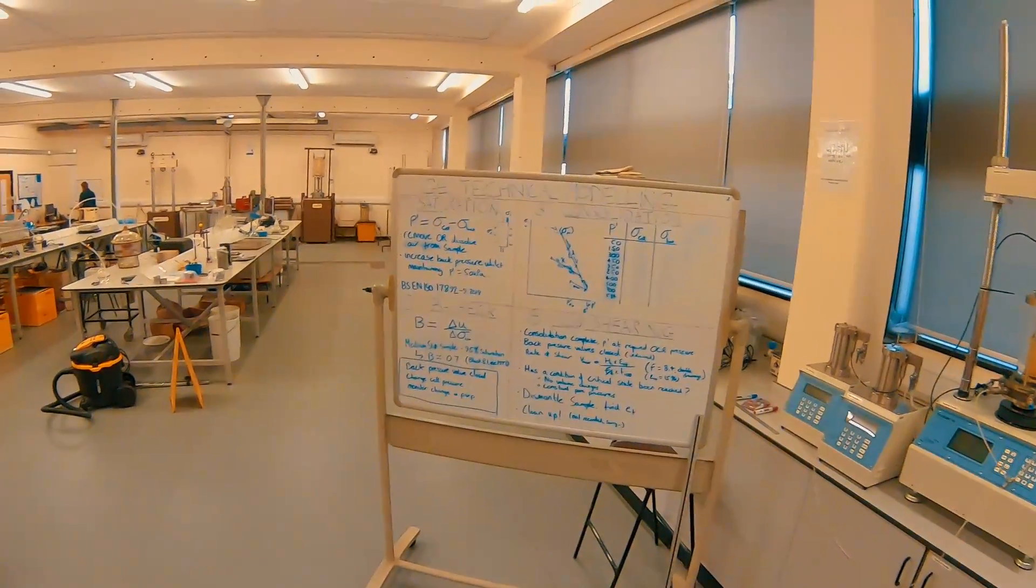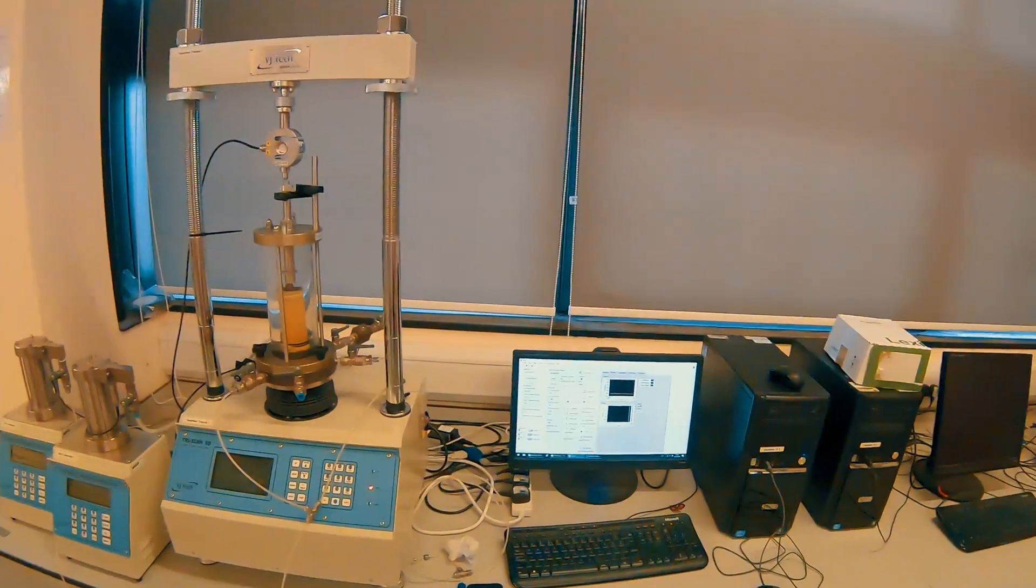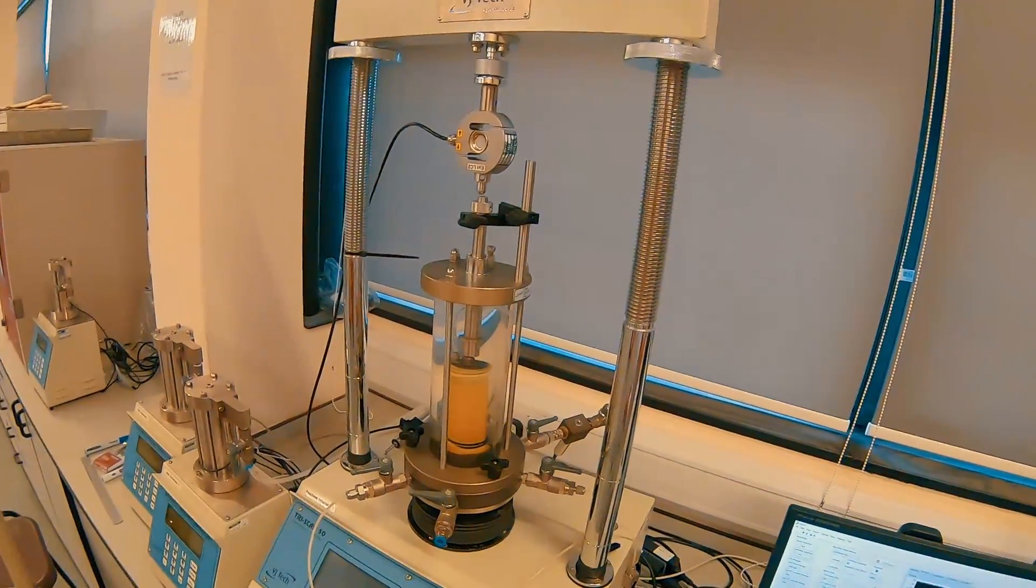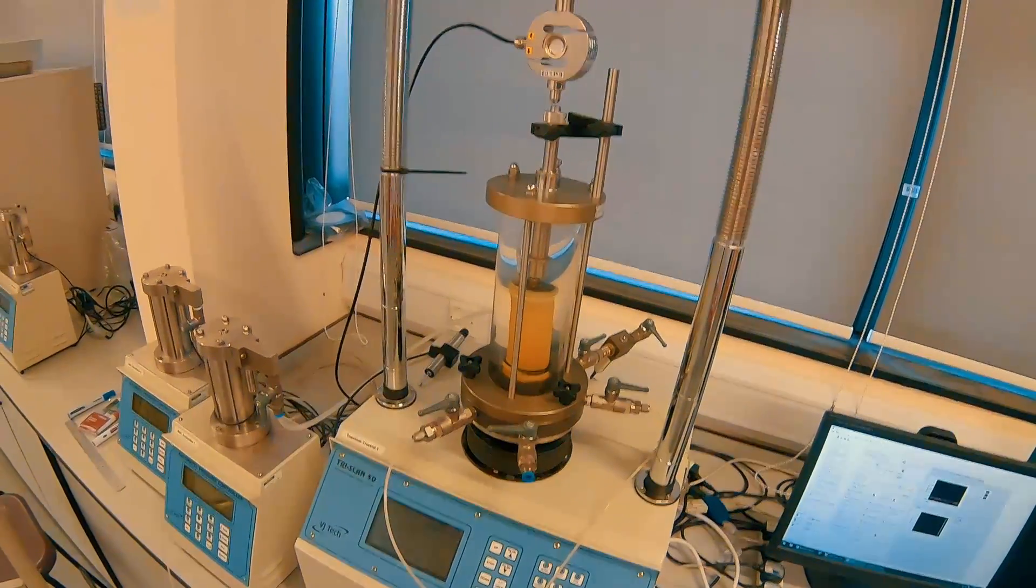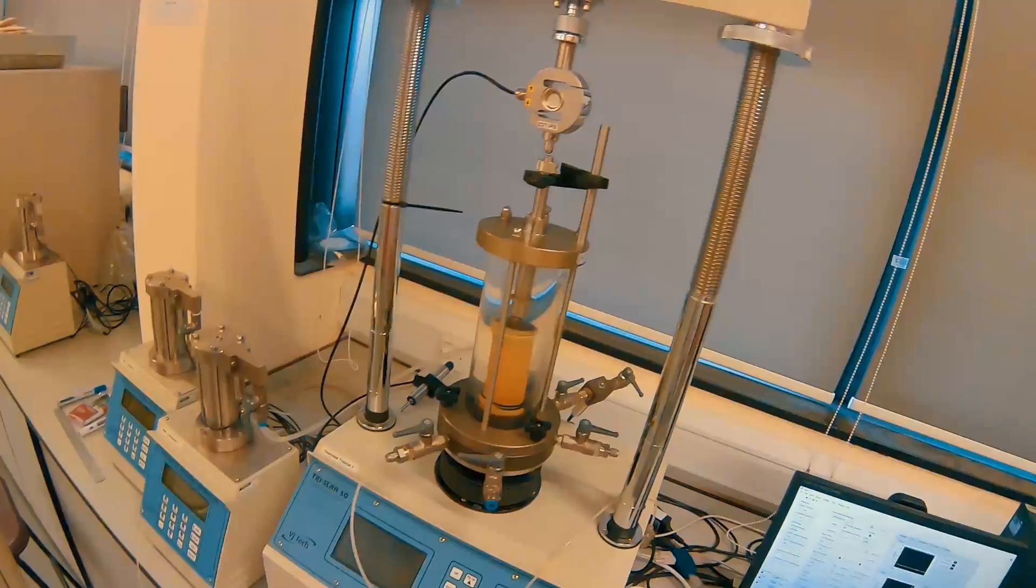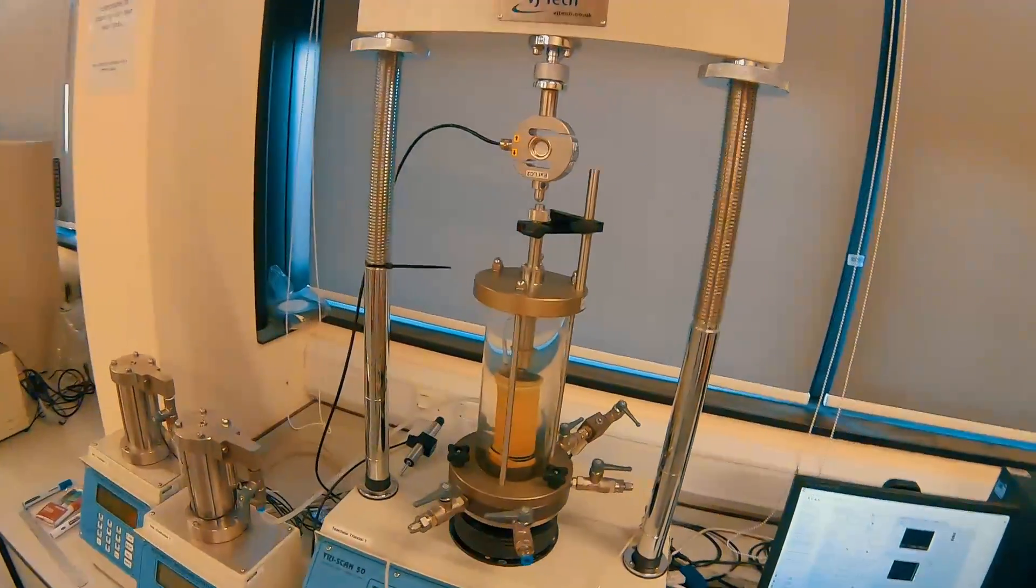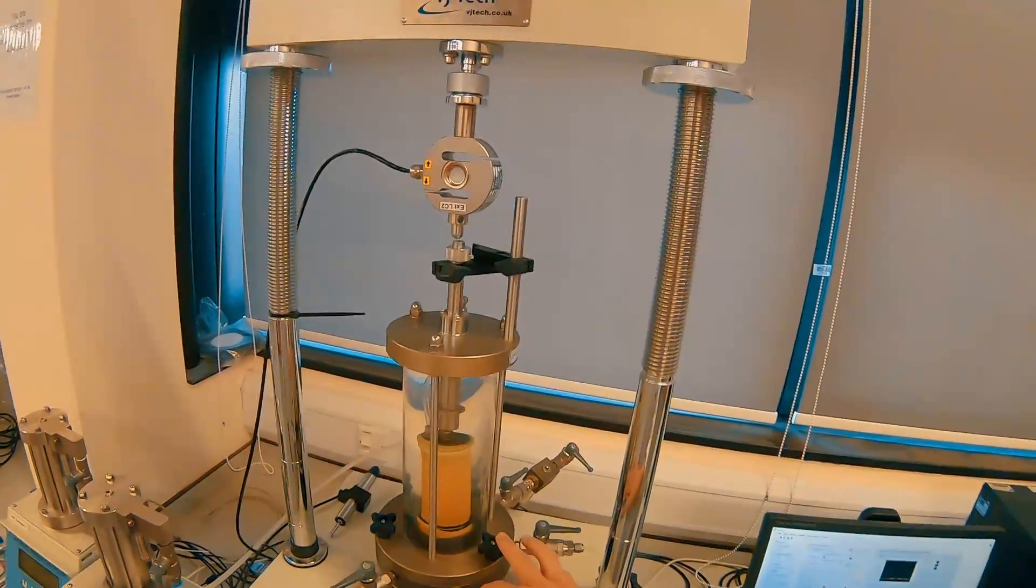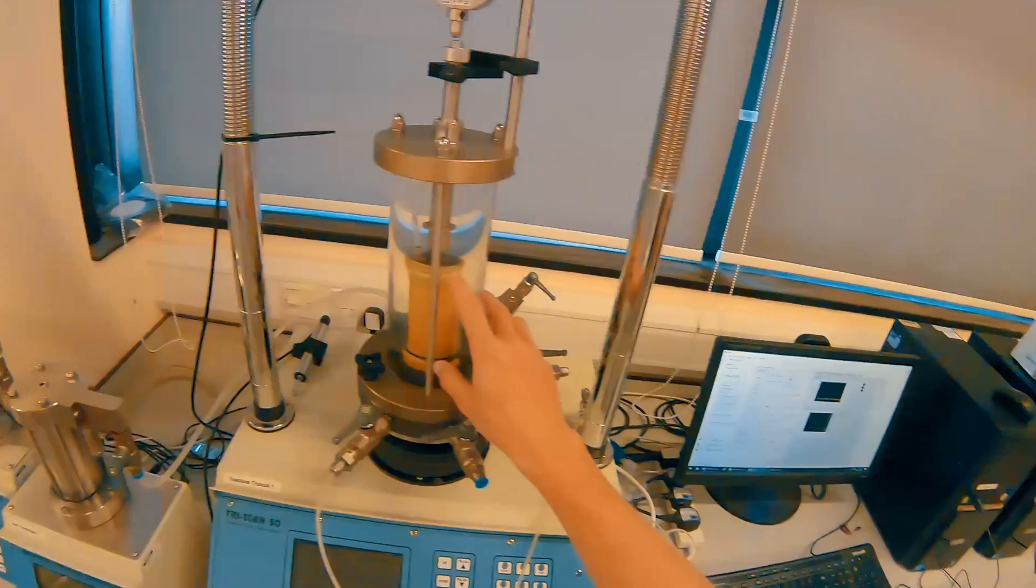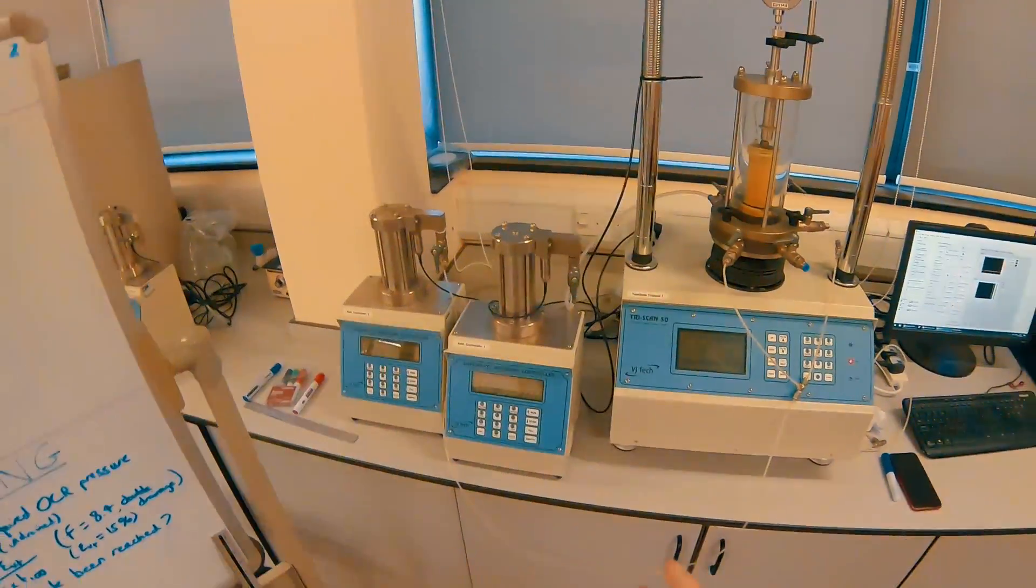We then monitor the change in pore water pressure using the PPT. What we need to look for is a highly saturated sample—a highly saturated sample will give you the best results. You don't want any air within your sample as it can change pressure and doesn't line up with the assumption that water is incompressible. In our sample at the moment, we have some air bubbles in the feed lines.